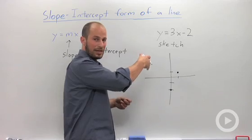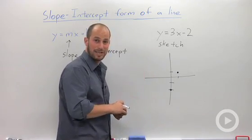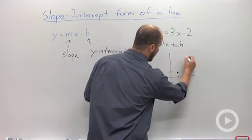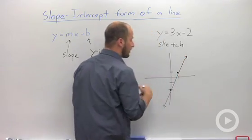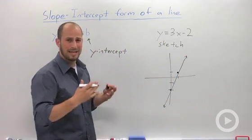We could continue on going up 3 over 1, but we really only need two points to get a line. Connect our dots and our line is going to look something like that.